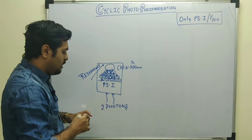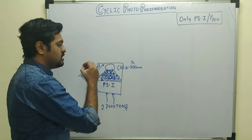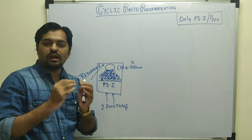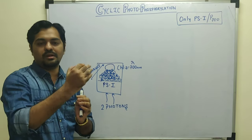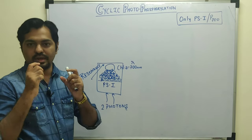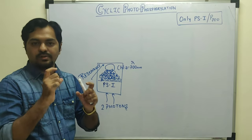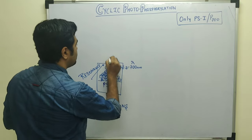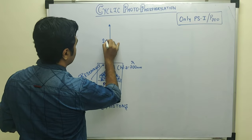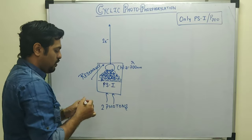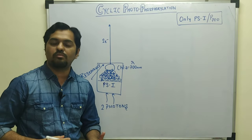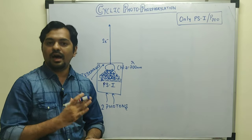As the energy of the photon reaches the reaction center, the electron goes from the ground state into an excited state. At a certain energy level, it expels the electrons. When chlorophyll A (PS1) expels the electrons, it becomes positively charged — what we call the ionized state.